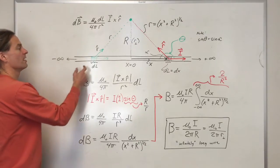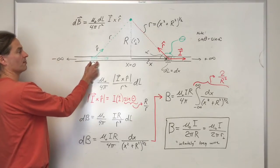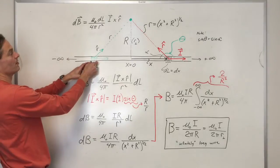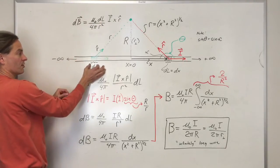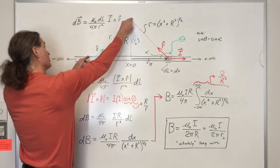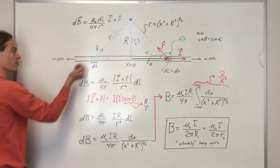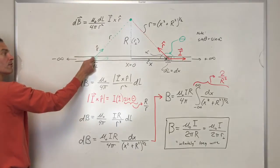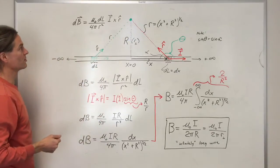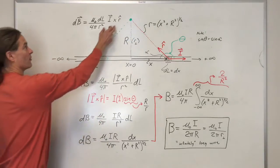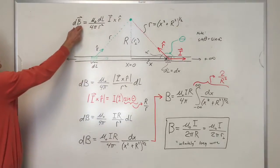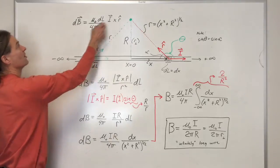The Biot-Savart law says that for an infinitesimal segment of current, to find the magnetic field produced at some point due to this infinitesimal segment of current, we have some constants. We need the infinitesimal length of current. It's inversely proportional to the square of the distance from that infinitesimal current to the field point. Also involved is the cross product between the current and the unit vector pointing from the infinitesimal current segment to the location where we want to know the magnetic field. Now we have to be careful with this cross product — it has both a magnitude and a direction. The direction of the cross product gives the direction of the contribution to the magnetic field.